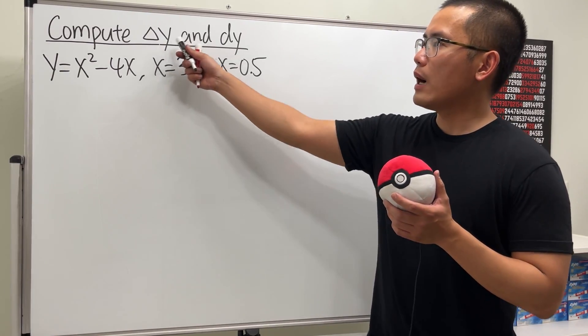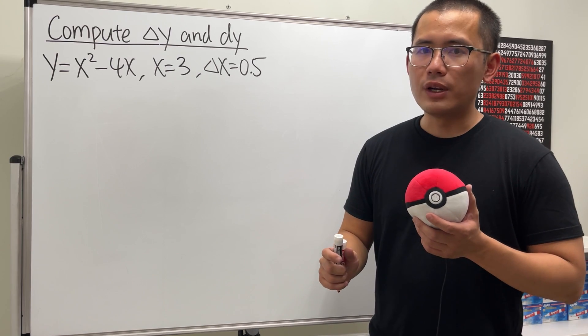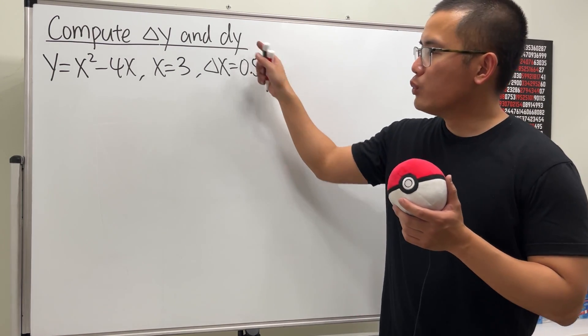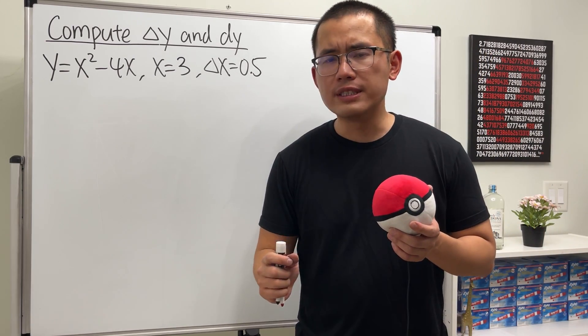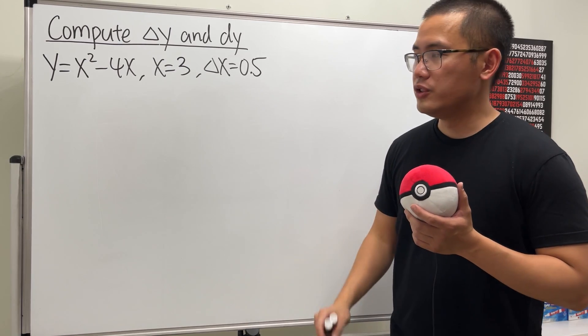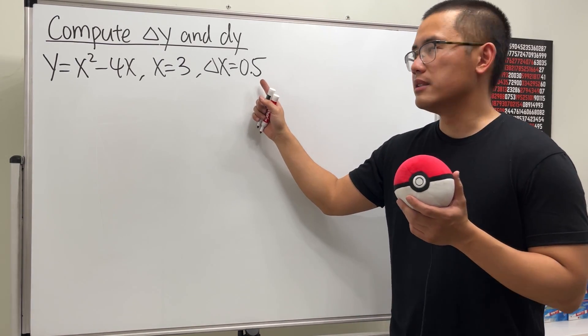Okay, let's see how we can compute delta y and dy. First, delta y is the exact difference between the new y value and the original y value, and dy is the approximate difference by using derivative. This right here is called the differential.